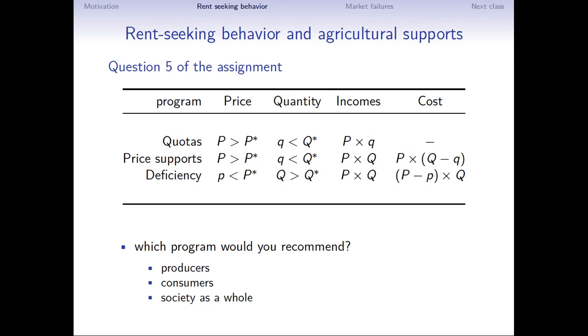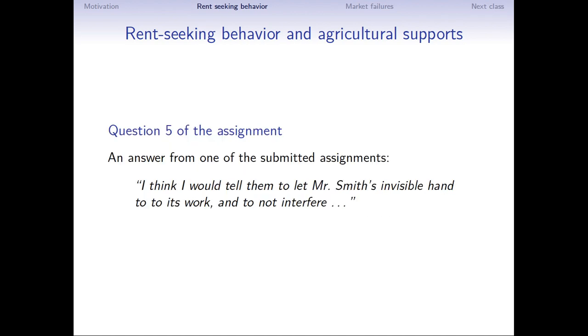So if you were a social planner, quote unquote, an economist who stood back objectively and looked at this market, which of these programs would you recommend? Well, the answer from one of the assignments is, I think I would tell them to let Mr. Smith's, that is Adam Smith's invisible hand to do its work. I'm sorry, that's a typo, to do its work and to not interfere. And that's the right answer. We already know as economists that the situation that maximizes the social surplus is the perfectly competitive outcome. All the other outcomes have a cost in efficiency, a cost that the individual producers of this commodity don't face, that they push onto society as a whole. And in some cases, the consumers of this commodity. But for society as a whole, it's less efficient outcome.